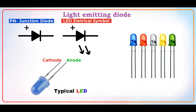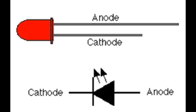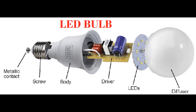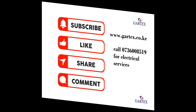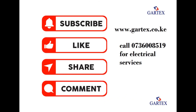We have red, white, yellow, green, etc. This is the symbol of a light emitting diode. Light emitting diodes are used in LED bulbs. This is an example of an LED bulb.